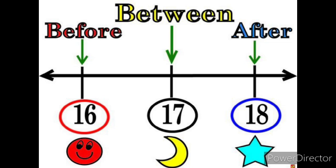Look at this picture. We can see numbers 16, 17 and 18. Number 16 is before the number 17, and number 17 is between 16 and 18, and number 18 is after 17.